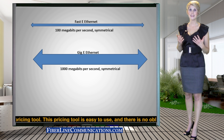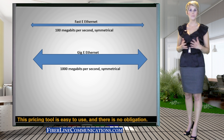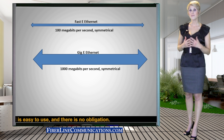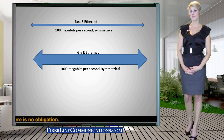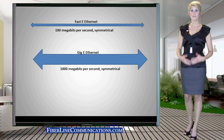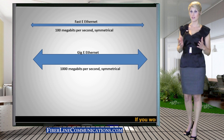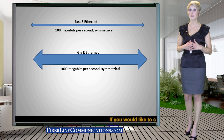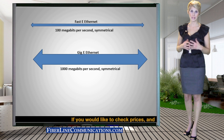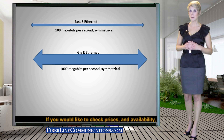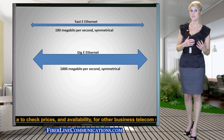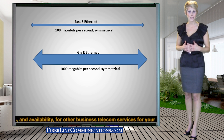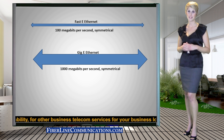Both Fast Ethernet and Gigabit Ethernet can also be provided in fractional increments. Fractional Fast E is provided at any bandwidth increment from 10 Mbps up to 90 Mbps. Fractional Gig E is provided at any bandwidth increment from 100 Mbps up to 900 Mbps. For example, a customer could order a Fractional Fast E circuit at 20 Mbps or a Fractional Gig E circuit at 400 Mbps.